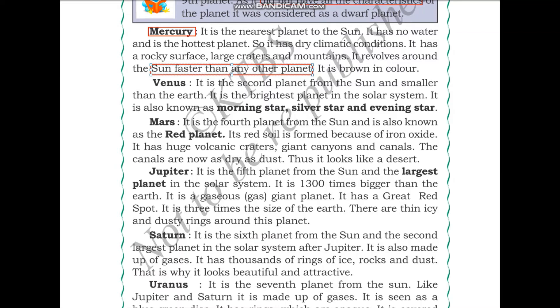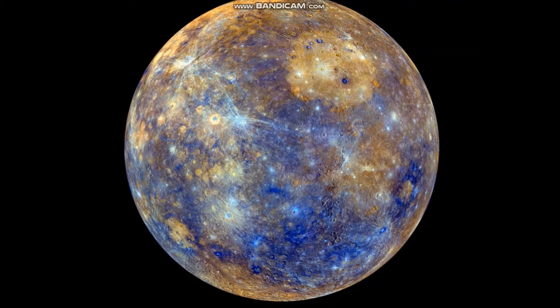Let us take a look at a recent photograph of the planet Mercury. An important point to note is that although Mercury is the closest planet to the sun, it is not actually the hottest planet in the solar system. This is because Mercury does not have an atmosphere — that layer of gases that surrounds a planet.